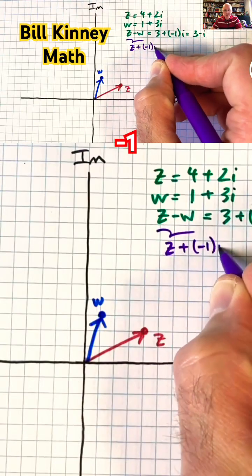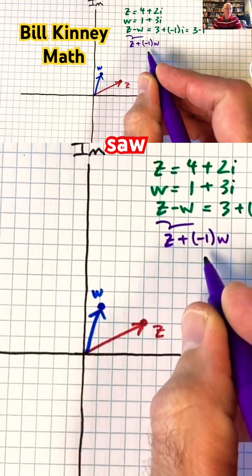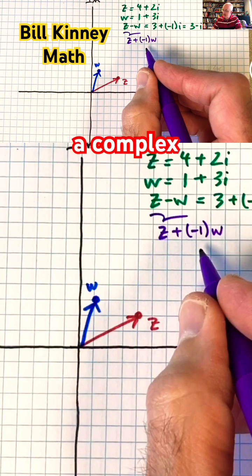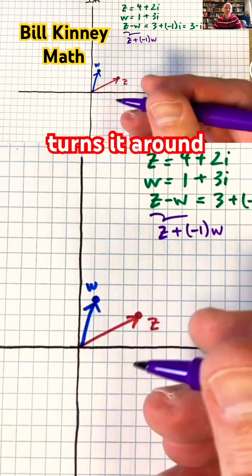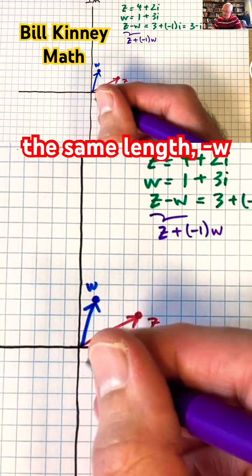z plus negative 1 times w. We saw from the last video that when you multiply a complex number by negative 1 as a vector, it turns it around the opposite direction but the same length.